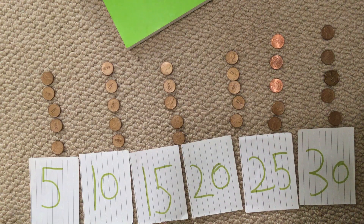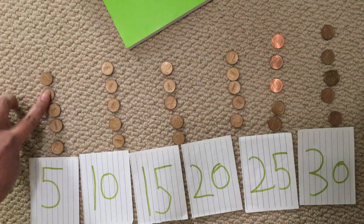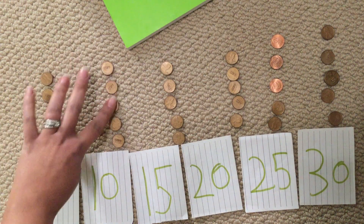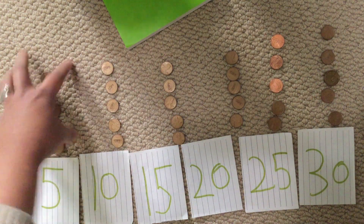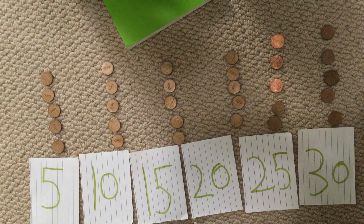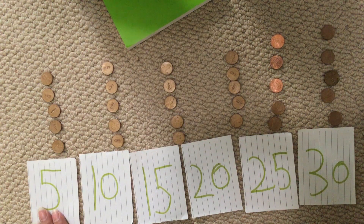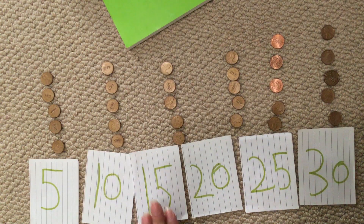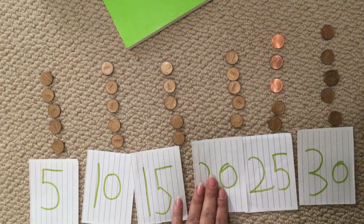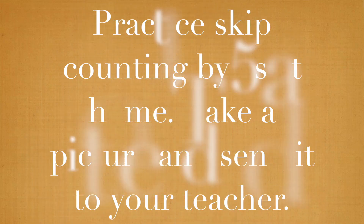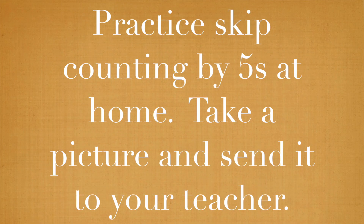That's skip counting because we don't need to go one, two, three, four, five, six, seven, eight, nine, ten — we don't always have to count by ones. If we know that these are sets of five, we can say five, ten, fifteen, twenty, twenty-five, thirty. Practice skip counting by fives at home, take a picture and send it to your teacher. Bye crew! Bye!